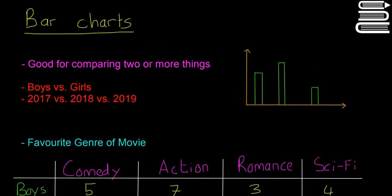So the next type of graphical representation of data we're going to look at is a bar chart. Bar charts are really good for comparing two or more things.